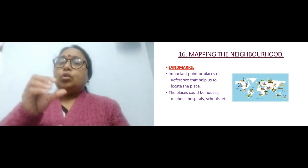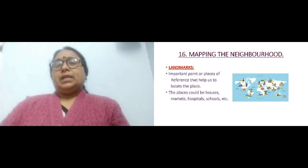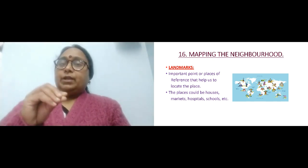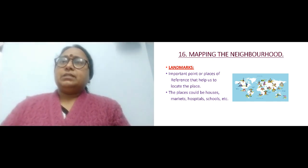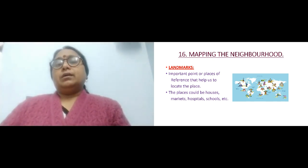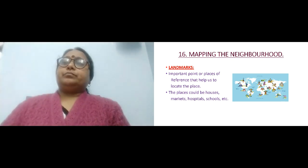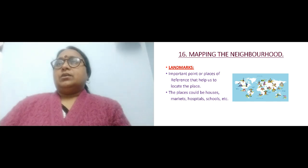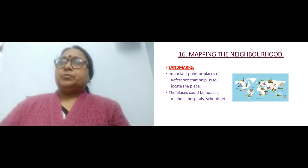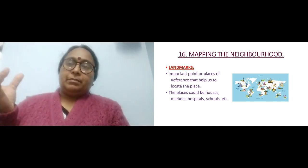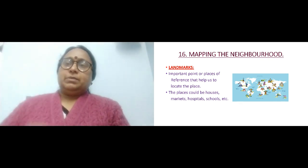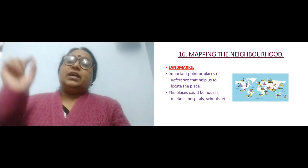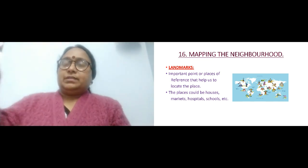The next topic is landmarks. Landmarks are some important points or places of reference that help us to locate a place. You use symbols to find out the place. For example, here is a world map and it has small pictures on it. For India, the famous landmark is the Taj Mahal, so a Taj Mahal symbol is placed there.